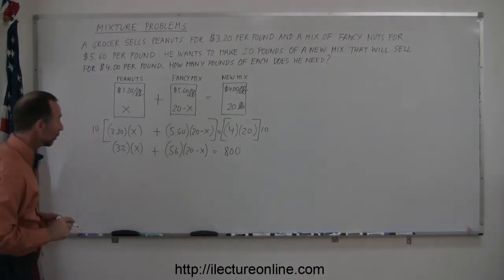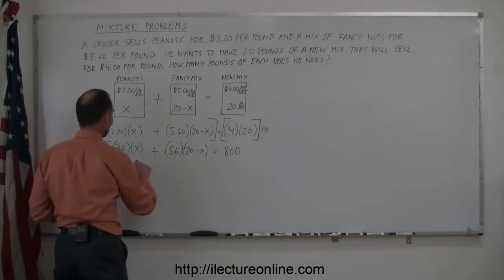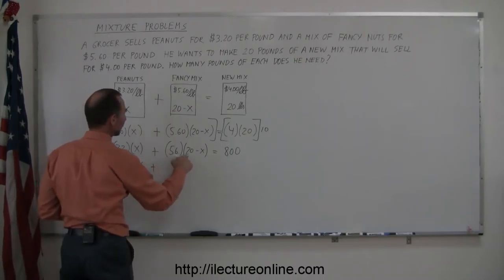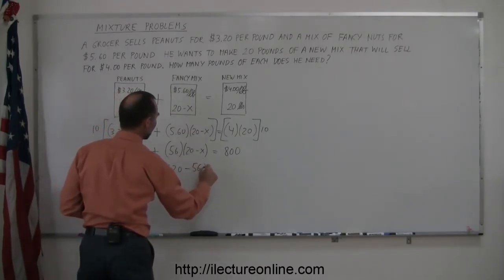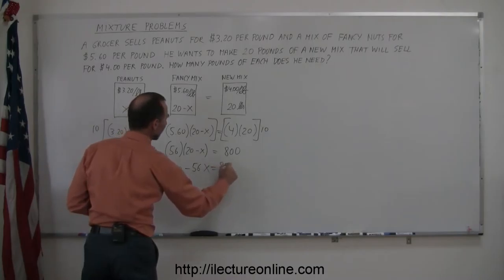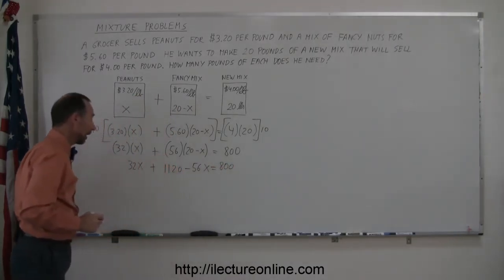Now we get rid of the parentheses. So this is 32X plus 56 times 20, 20 times 50 is 1,000, 20 times 6 is 120, so that's 1,120 minus 56 times X is 56X, equals 800. And now we're ready to go ahead and solve for X.